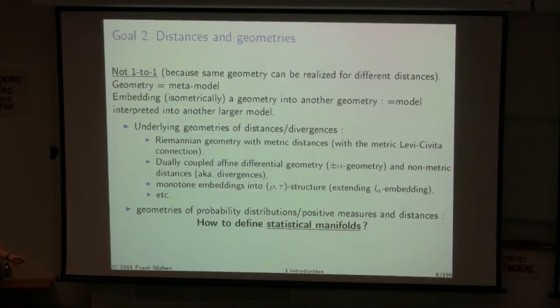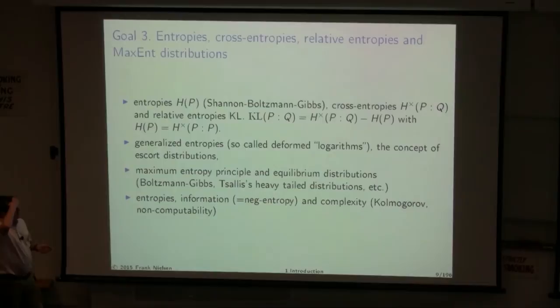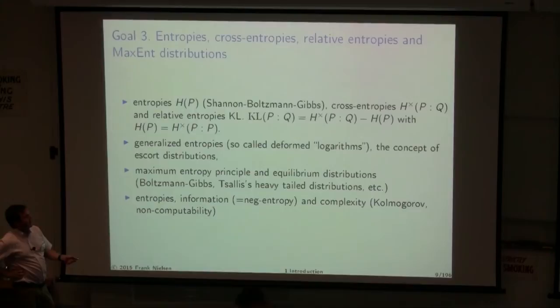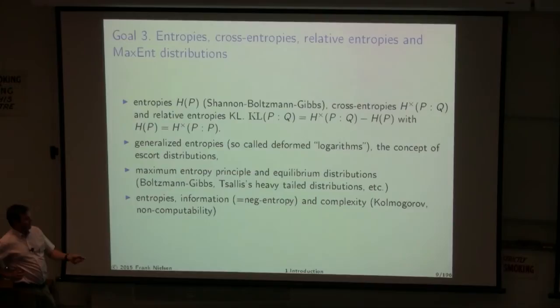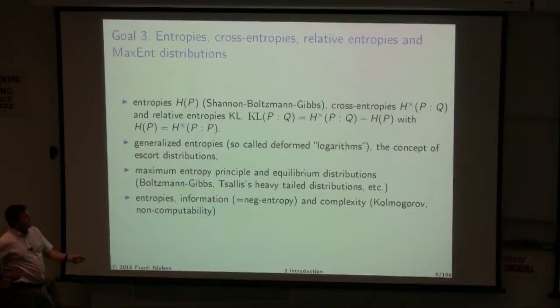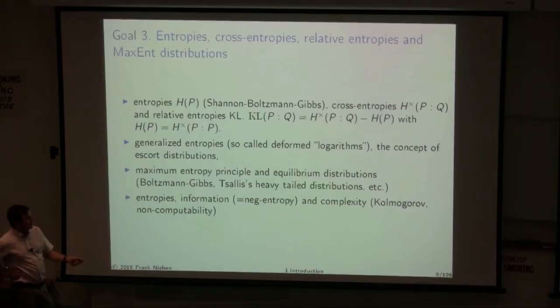The third goal is about entropies. From Shannon entropy, you can define cross-entropy and relative entropy (Kullback-Leibler divergence). This can be generalized by deformed logarithms — instead of the natural logarithm for Shannon, an extension gives rise to generalized entropies. Entropy is also useful for estimating distributions given moment constraints via the maximum entropy principle. We'll discuss information, which you can think of as negative entropy, and there's also a link with Kolmogorov complexity.